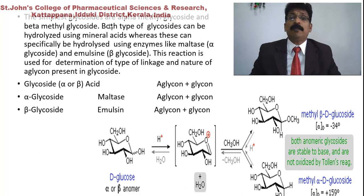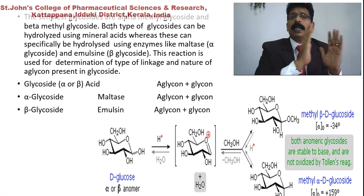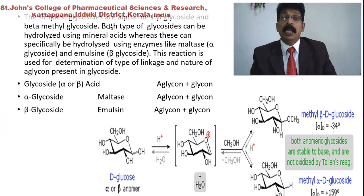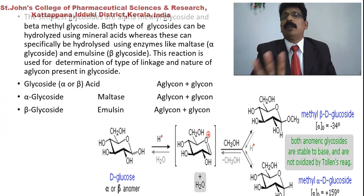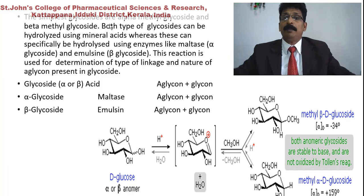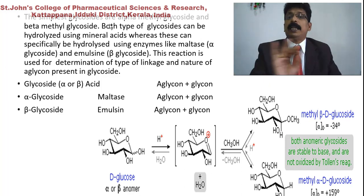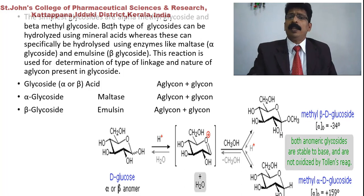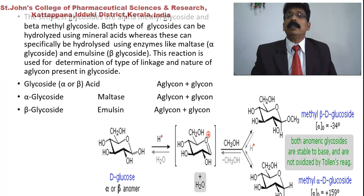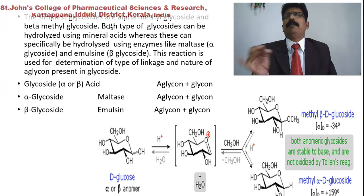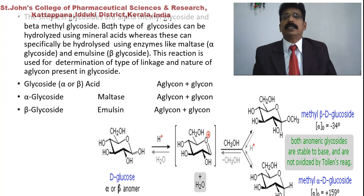The simplest glycosides are alpha-methyl glycosides and beta-methyl glycosides. Both types can be hydrolyzed by mineral acid. However, enzymatic hydrolysis can specifically determine whether it is alpha or beta: alpha-glycosides are hydrolyzed only by maltase, while beta-glycosides are hydrolyzed by emulsin. If emulsin has no effect on a sample, it is an alpha-glycoside; if it hydrolyzes, it is a beta-glycoside. Conversely, if maltase does not hydrolyze, it is a beta-glycoside.